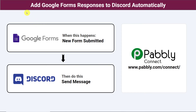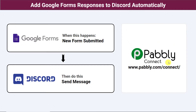Hello everyone. In this video we will learn how to add Google Form responses to Discord automatically. You are familiar with Google Forms — it is an awesome form builder — and Discord is an instant messaging platform. Imagine you are running an online bookstore with your team and using Google Forms to collect customer details. Once a form is submitted, those details should be conveyed to your team on Discord automatically. But there is no active connection between Google Forms and Discord, so we need to bring in an integration and automation software called PablyConnect to integrate them.